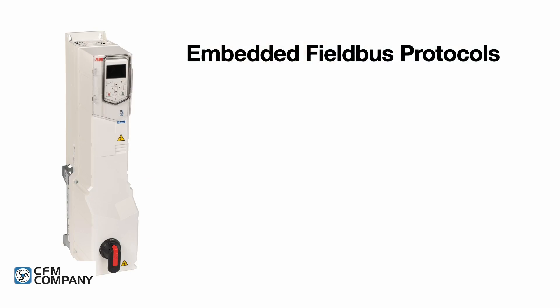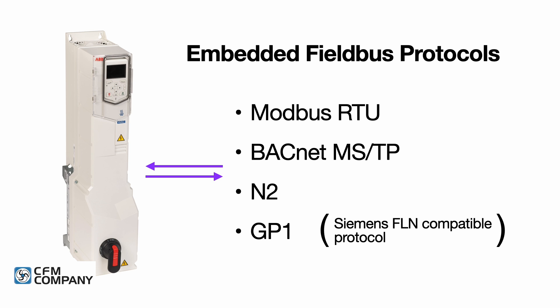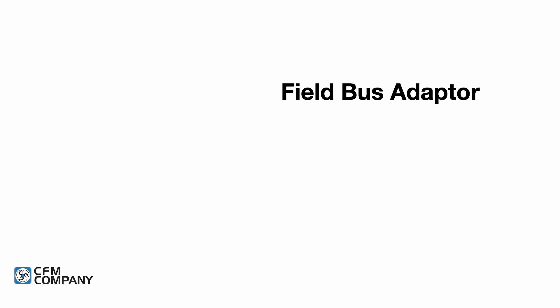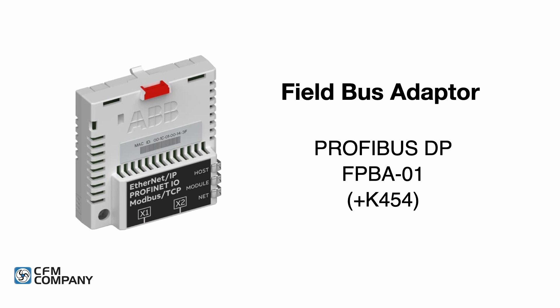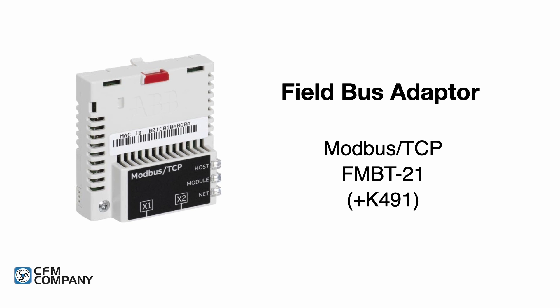The ACH580 includes the following standard embedded fieldbus protocols: Modbus RTU, BACnet MSTP, Johnson N2, and GP1, a Siemens FLN compatible protocol. Additional protocols are available with the installation of an optional fieldbus adapter (FBA). Fieldbus adapters are available for DeviceNet, LonWorks, Profibus DP, BACnet IP, Ethernet IP, and Modbus.